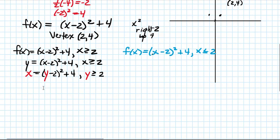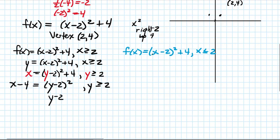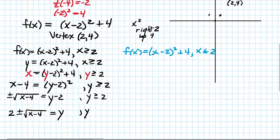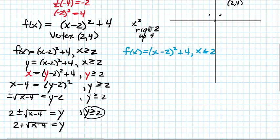I've switched the x and y's and now I'm solving for y. We subtract 4 over, leaving y minus 2 squared on the other side, keeping in mind y has to be greater than or equal to 2. Using the square root property, y minus 2 must equal plus or minus the square root of x minus 4. Adding 2 over, we get y equals 2 plus or minus the square root of x minus 4. Since y must be greater than or equal to 2, the only option is to add — we can't subtract, as that would give a number less than 2.